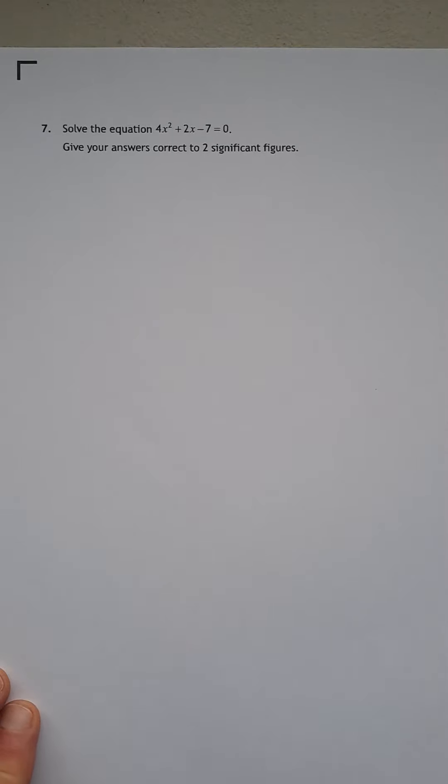Hi there, this is Mr. Lees doing the National 5 Mathematics paper from 2022. This is paper 2 and we're going to do question 7 where we have to solve the equation 4x² + 2x - 7 = 0. And we have to give our answer to two significant figures at the end.